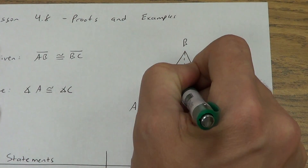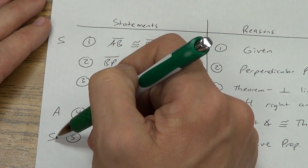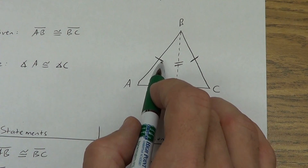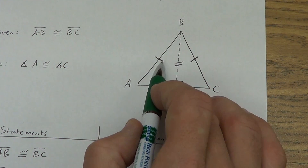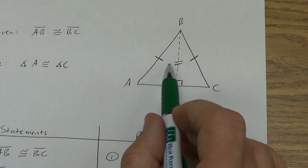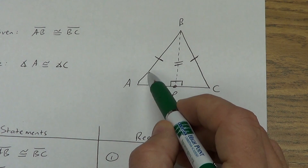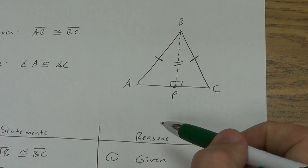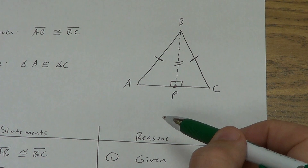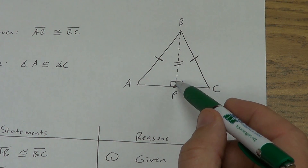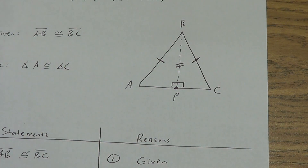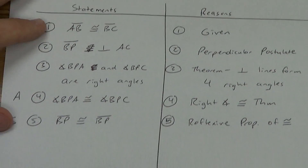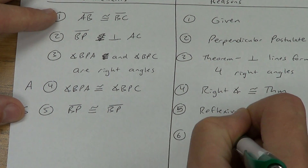Now I have two sides and an angle. I need to check my order. The angle is not between the two sides, so it's side-side-angle. Normally SSA doesn't work, but when the angle is a right angle, we rename it HL — hypotenuse-leg congruence, which is a theorem. So triangle BAP is congruent to triangle BCP by HL congruence.